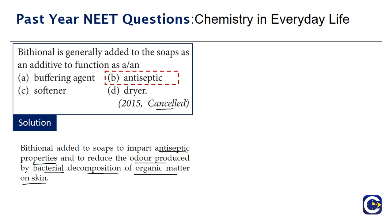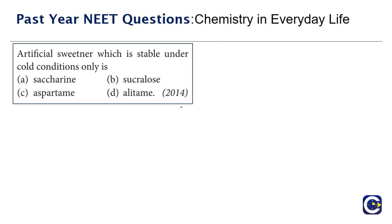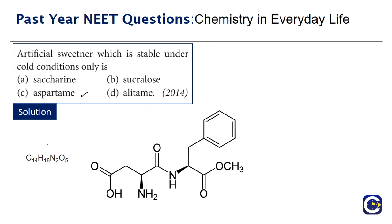This question is about an artificial sweetener which is stable under cold conditions only. As discussed in the previous question, the answer is aspartame. The formula for aspartame is C14H18N2O5, and its structure is shown here. Aspartame is stable only under cold conditions, whereas sucralose is stable even at cooking temperature. So the correct answer is aspartame, which is stable only at cold conditions.